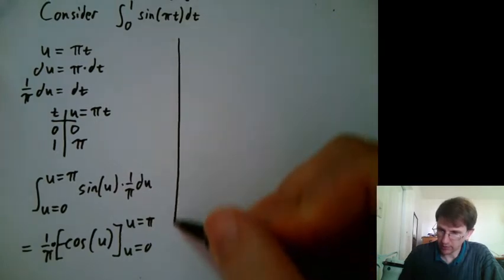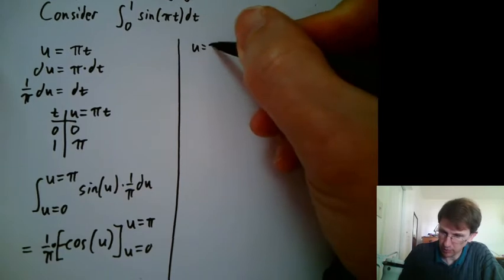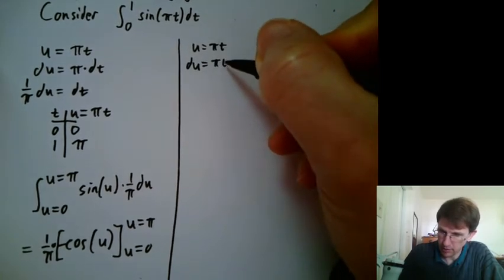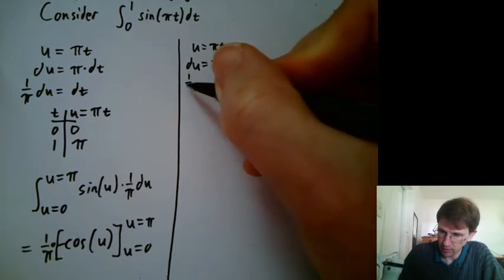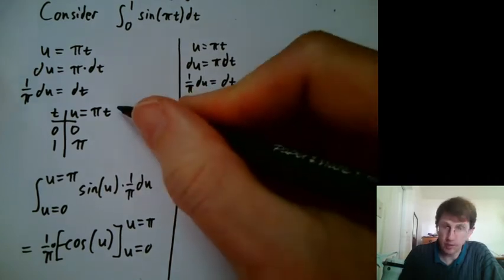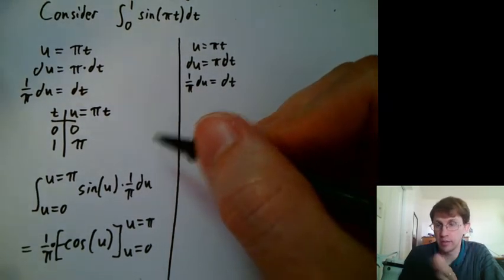Another way to think of it is to do the same thing to begin with. So u equals π t, du equals π dt, 1 over π du equals dt. But then this part, we're going to skip, not translate the t values to u values.